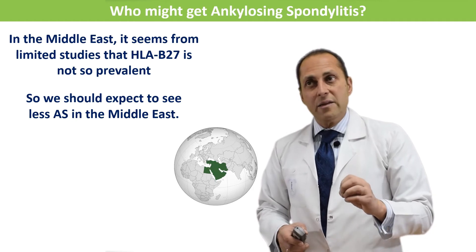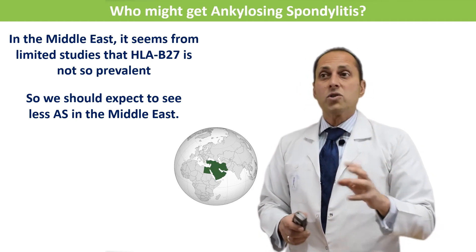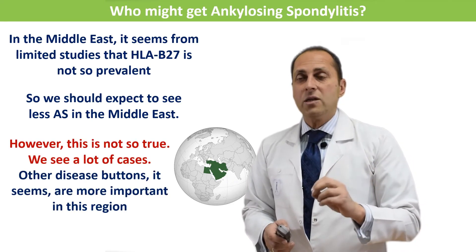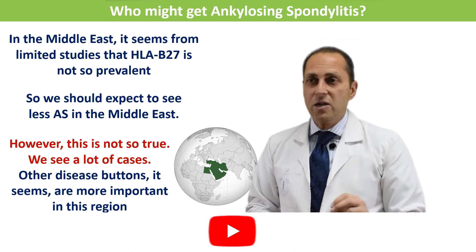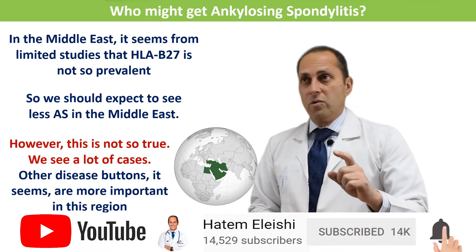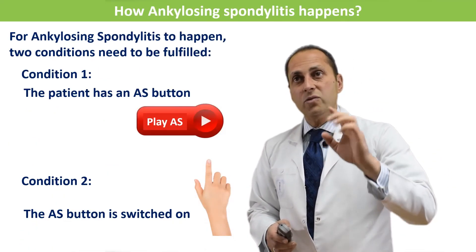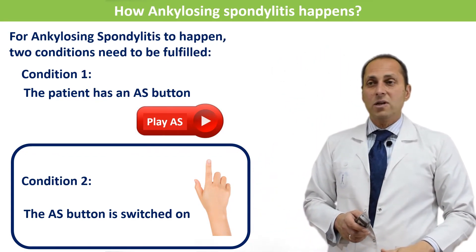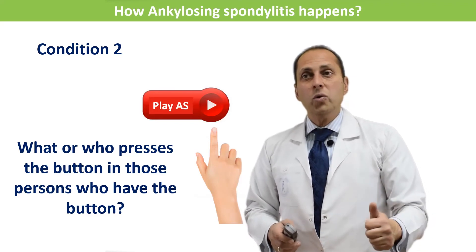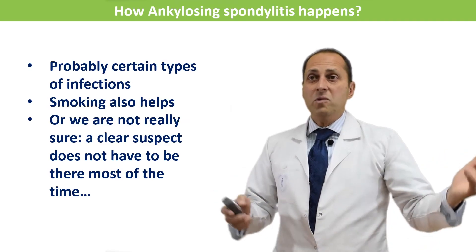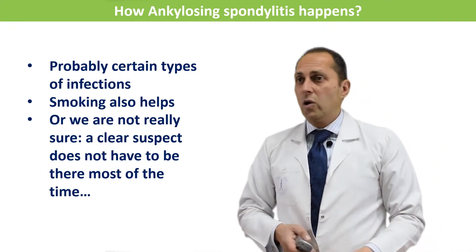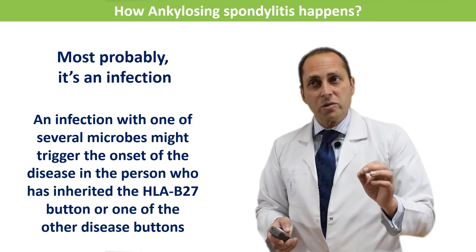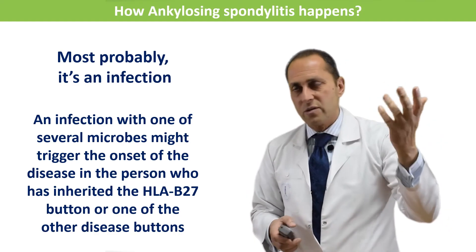In the Middle East, from limited studies, HLA-B27 does not seem so prevalent, so we should expect to see fewer ankylosing spondylitis patients there. However, this is not true — we see a lot of cases. Other disease buttons seem to be more important in this region. So, for ankylosing spondylitis to happen: the patient has a button, and the button is switched on. What presses the button? In those who have the button, probably certain types of infections — smoking also helps — or sometimes no clear suspect. Most probably it's an infection with one of several microbes like Shigella, Salmonella, or Yersinia enterocolitica.